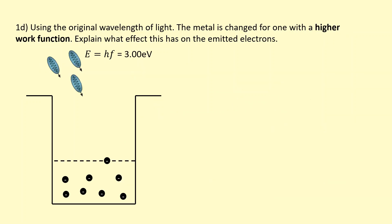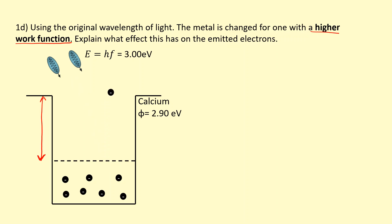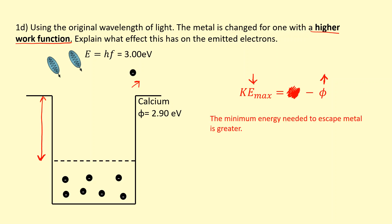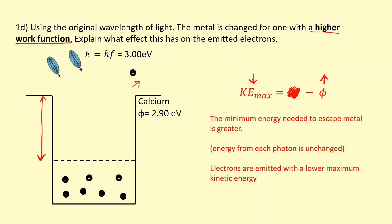We've gone back to using the original blue light, but we're now using a metal with a higher work function — for example, calcium. The minimum energy needed to escape from calcium is larger. So when the electron at the surface absorbs the photon, it comes out, but because it used more energy to escape, it comes out with a lower kinetic energy. Using this equation, the energy of each photon is the same as before, but because the work function has increased and we're subtracting a larger number, the maximum kinetic energy will decrease. So it comes out slower, with a lower maximum kinetic energy.